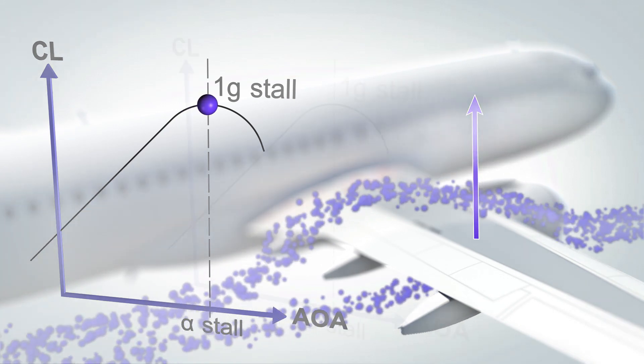During a turn, the lift vector is inclined and the total lift produced by the wings must be increased to maintain level flight. This causes an increase of the load factor. At a constant speed, the angle of attack is thus increased and the V-alpha prot rises on the PFD.